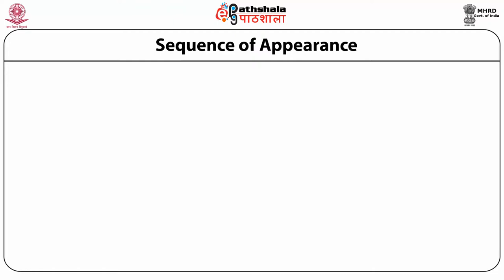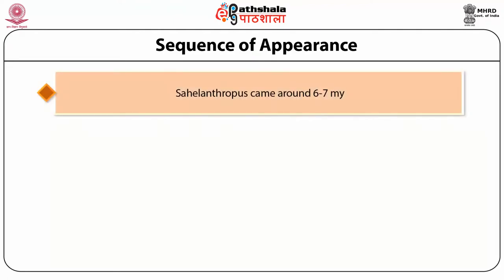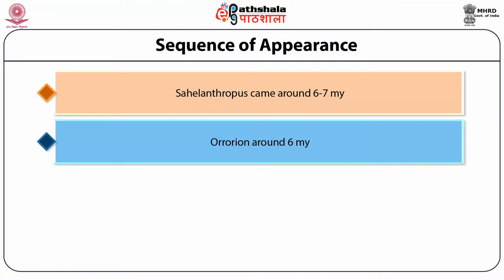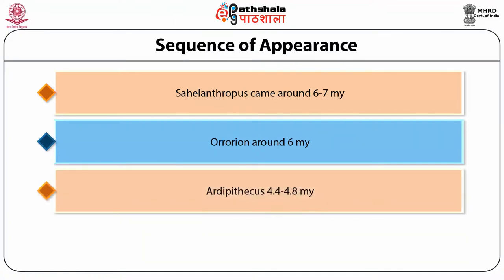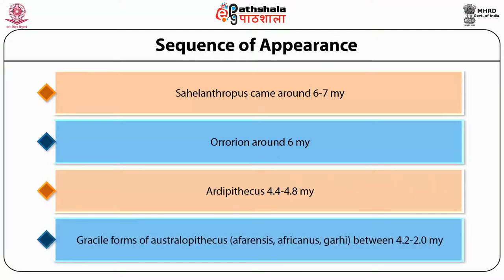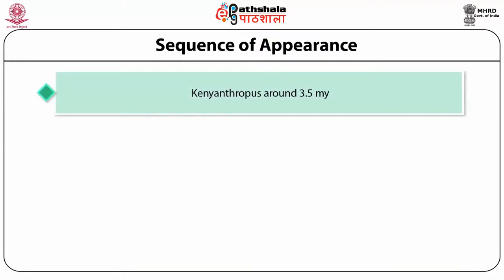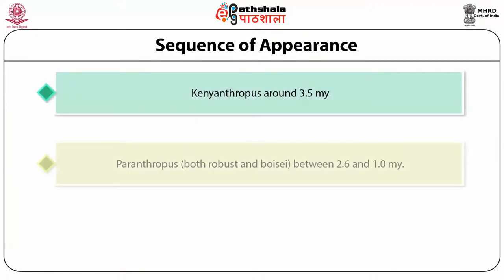The sequence of appearance from the fossil record reveals that Sahelanthropus came around 6 to 7 million years ago, Orrorin around 6 million years ago, Ardipithecus around 4.4 to 4.8 million years ago, the gracile form of Australopithecus — that is afarensis, africanus, and Australopithecus garhi — between 4.2 to 2 million years ago, Kenyanthropus around 3.5 million years ago, and Paranthropus both robustus and boisei between 2.6 and 1 million years ago.